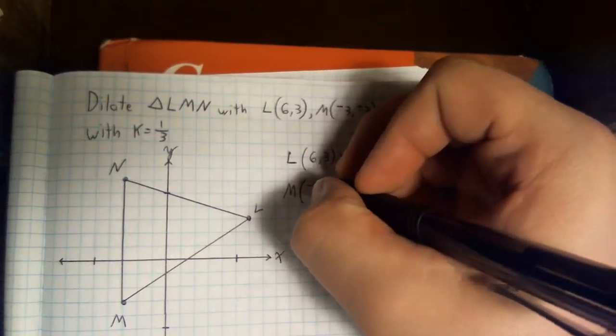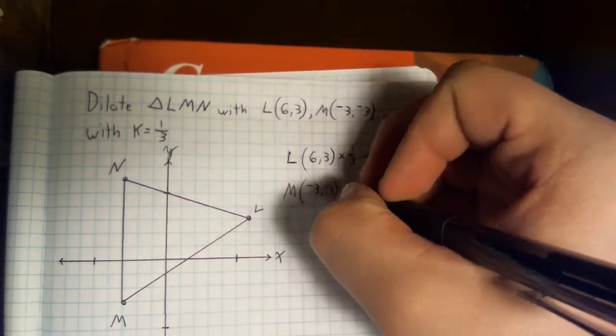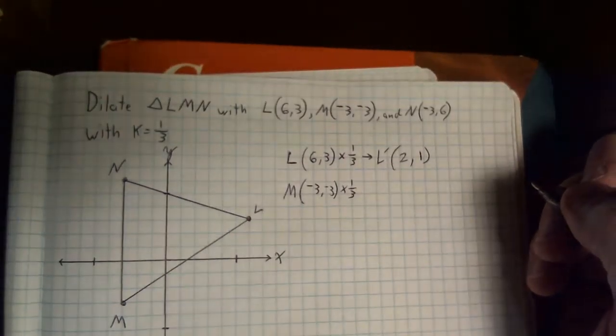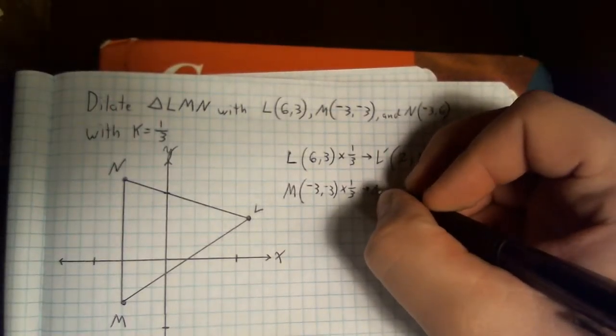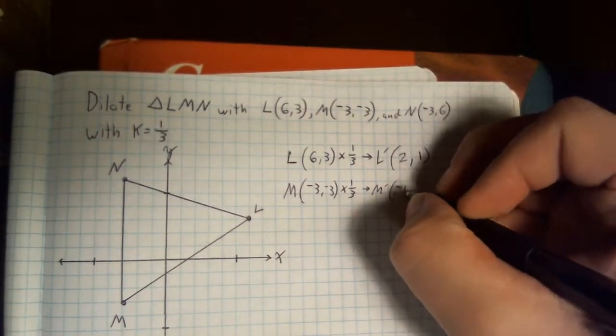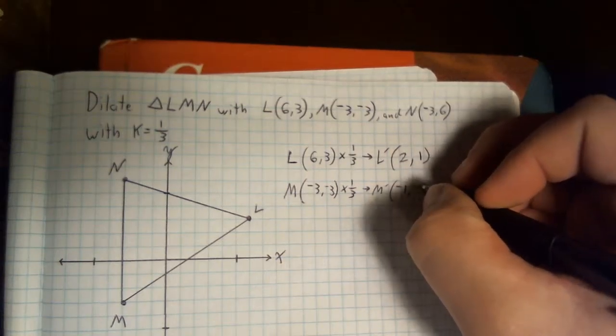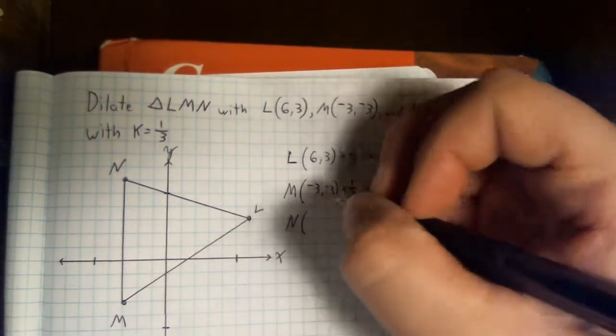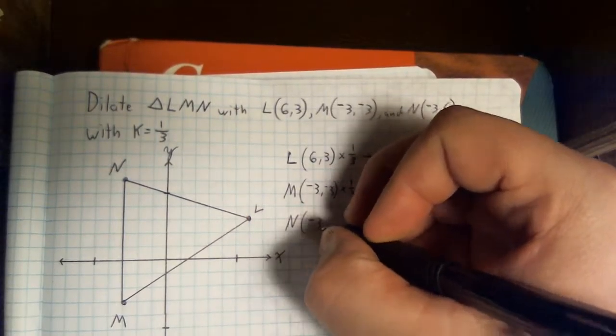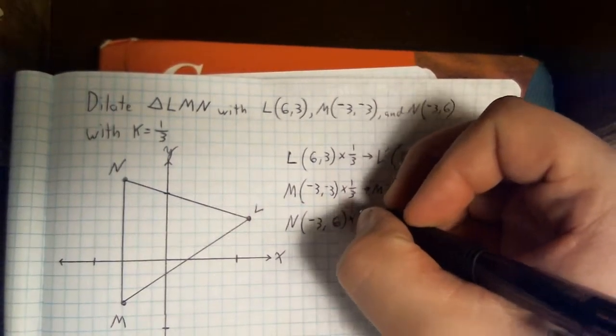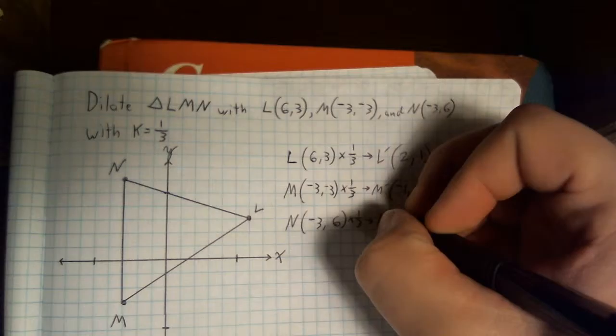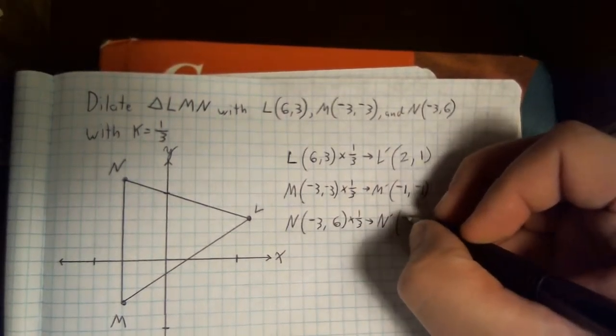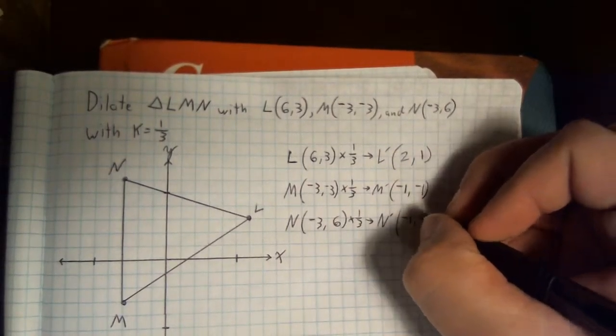For M at negative 3, negative 3, we're going to use a scale factor of 1 third gives M prime, 1 third of negative 3 is negative 1. And that's going to be the same for our Y coordinate. And finally N, when we multiply by the scale factor of 1 third, this will give us negative 1 and 1 third of 6 again is 2.